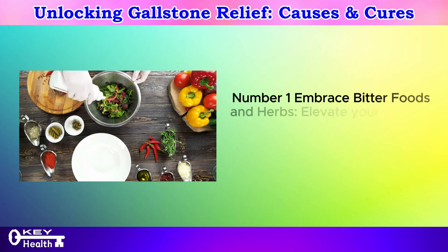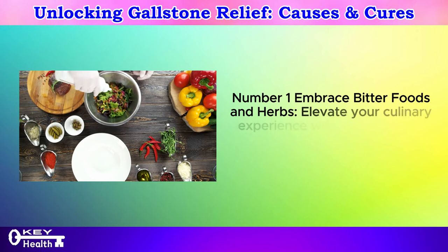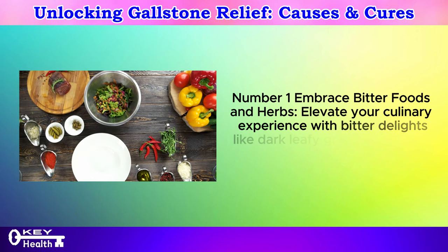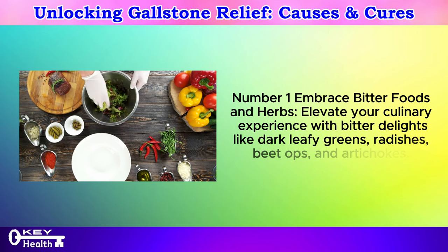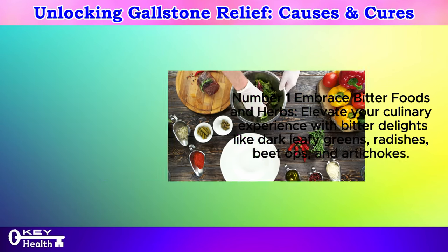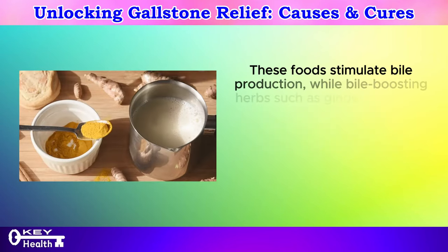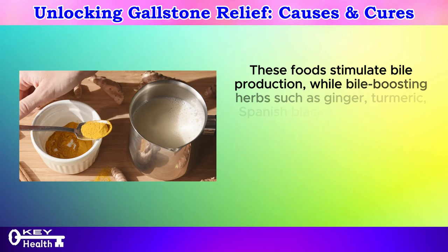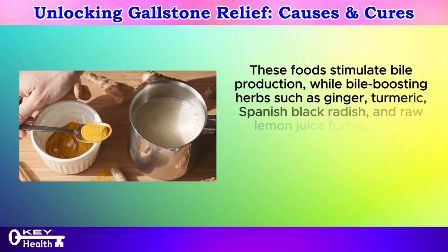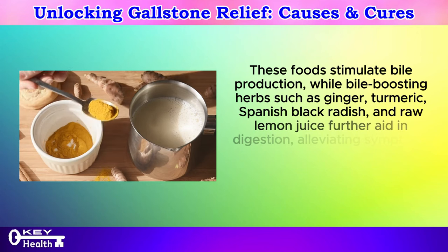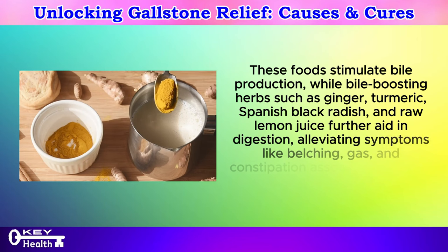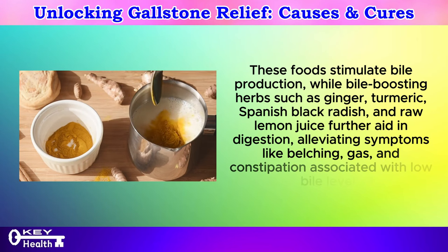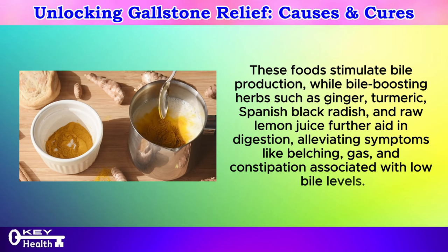Number 1: Embrace bitter foods and herbs. Elevate your culinary experience with bitter foods like dark leafy greens, radishes, beet tops, and artichokes. These foods stimulate bile production, while bile-boosting herbs such as ginger, turmeric, Spanish black radish, and raw lemon juice further aid in digestion, alleviating symptoms like belching, gas, and constipation associated with low bile levels.